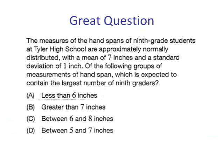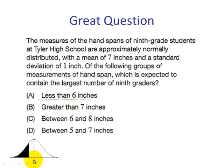Here's a good question. Measurements of handspans of 9th grade students at Tyler High School are approximately normally distributed with a mean of 7 inches and a standard deviation of 1 inch. Which of the following groups of measurements is expected to contain the largest number of 9th graders? This question is asking which choice has the largest area. Our mean is at 7.